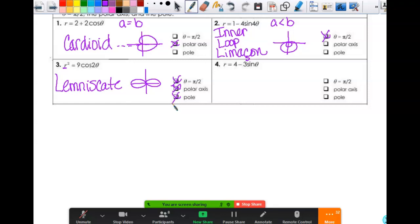Now, that's not because it's a lemniscate. It's because it's a lemniscate and it's cosine. If this had been sine, it would look like this. It would still be symmetric to the pole, but not to the polar axis or theta equals pi halves, right? That's why you have to actually determine the type.